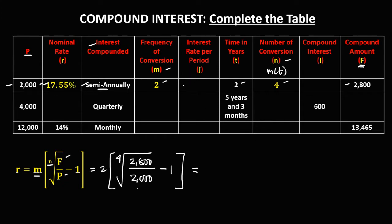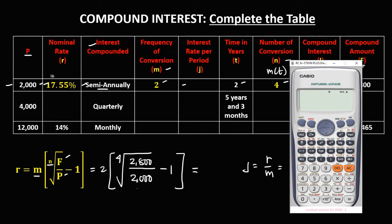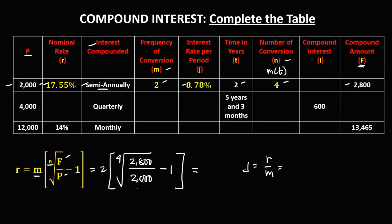To solve for the interest rate per period J, the formula is J equals R over M — the nominal rate divided by the frequency of conversion. Since R is 17.55, we compute 17.55 divided by M, where M is 2, so 17.55 divided by 2 equals 8.78. The interest rate per period is 8.78%.